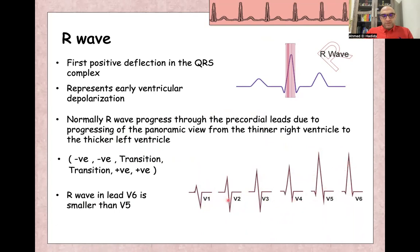The area of transition can be moving between these leads, but normally between V3 and V4. So R wave towards the lateral leads is much more bigger than the R wave on V1 and V2, and usually R wave in V5 is larger than R wave in V6.